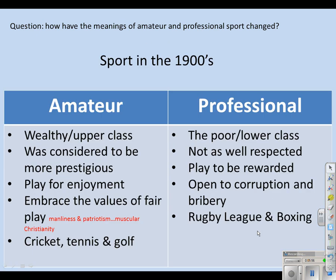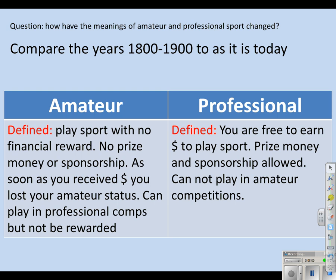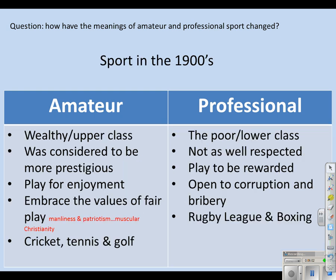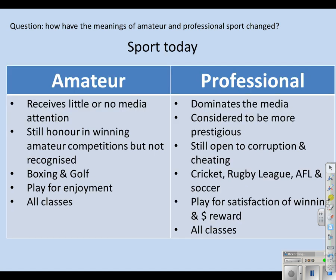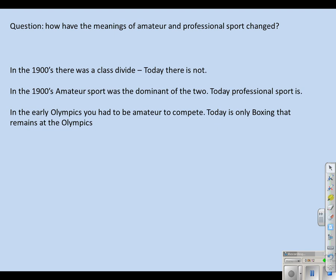To answer this question, you need an understanding of what it means to be an amateur and professional sportsman, and how it has changed from the 1900s to today. Three key points will set up your answer perfectly: the difference in the class divide, which is now more dominant of the two from the 1900s to today, and how at one point in time you had to be an amateur to compete in the Olympics — while that has changed quite drastically today.